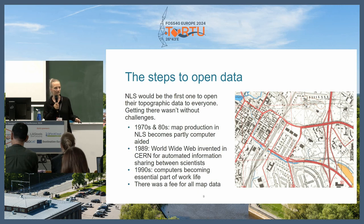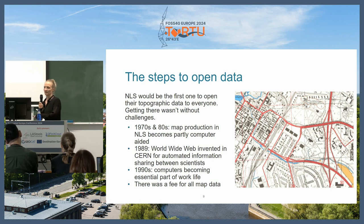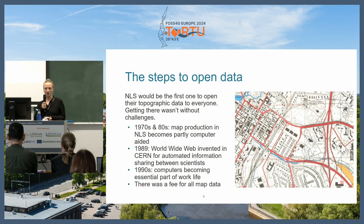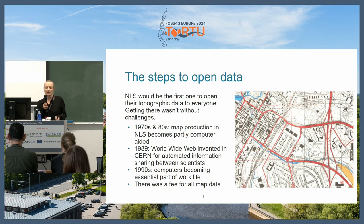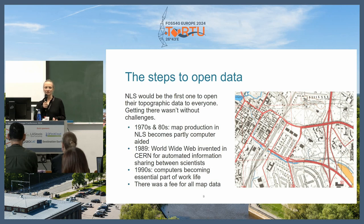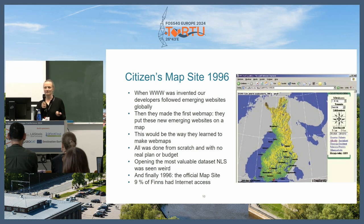It would become possible to have the idea that you could have digital data shared online. In the 1990s in Finland, computers would become an essential part of work life, with more and more interest in these kinds of things. But there would still be a fee for all data that National Land Survey was serving, and nearly everybody else around. There were no examples of open and free data — that would be dangerous, that would be weird.